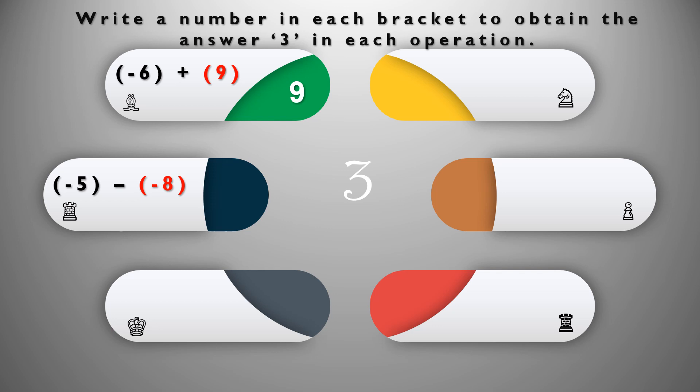Next: -5 - (-8). Let's solve it: minus and minus becomes plus, so -5 + 8 = 3. So what we have to write is -8. Next: -8 + [11] = 3. Here 8 is negative and 11 is positive; negative and positive becomes negative in sign, so 11 - 8 = 3. So we have to take 11.